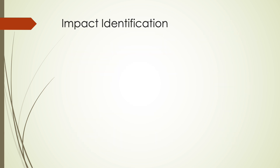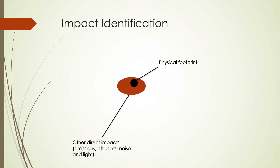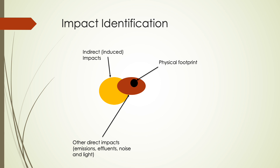The impact assessment should identify all types of impacts to be analyzed. It will generally include the physical footprint of the project, shown here in black. The direct footprint is extended to consider other direct impacts such as emissions, effluence, dust, noise, and light impacts, as shown in red. If a project induces other impacts, such as other types of development near the project, this must be included as well, as shown in orange.